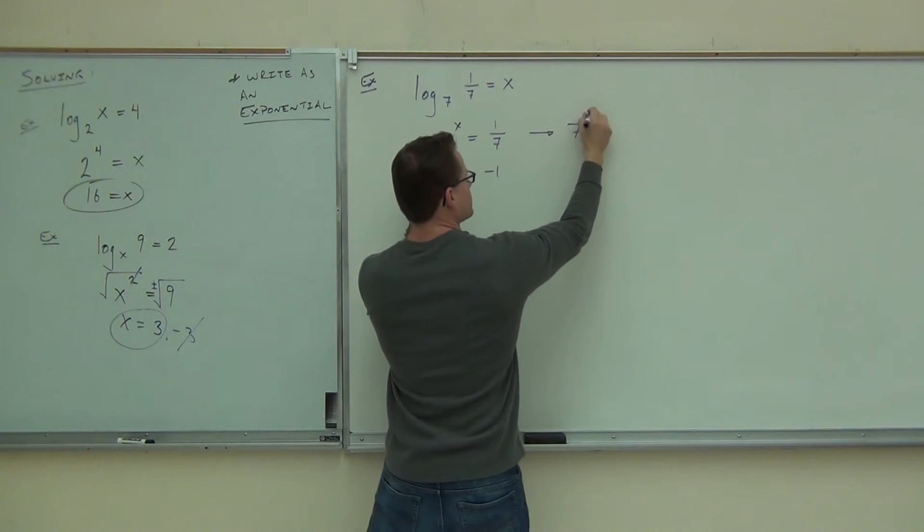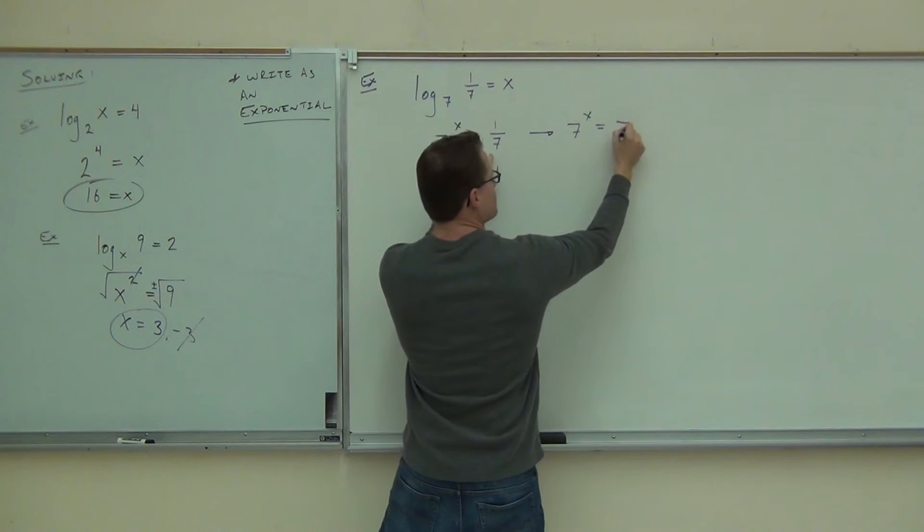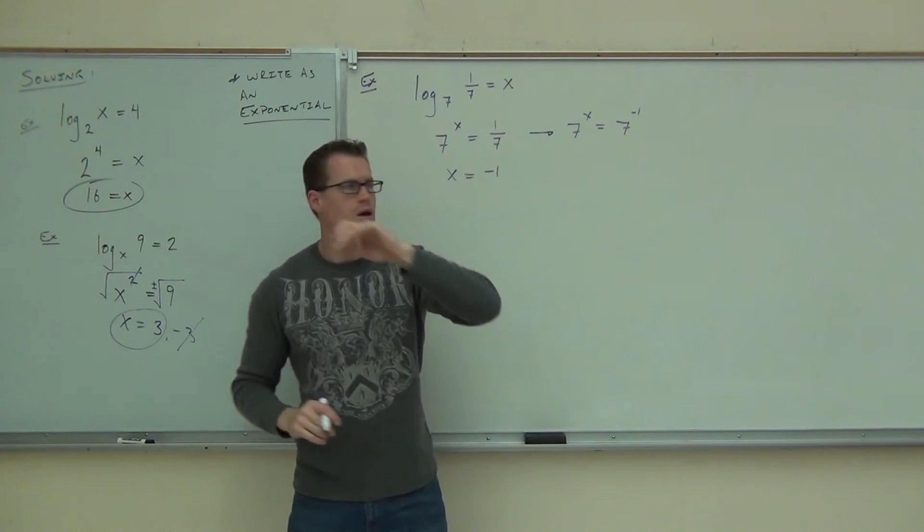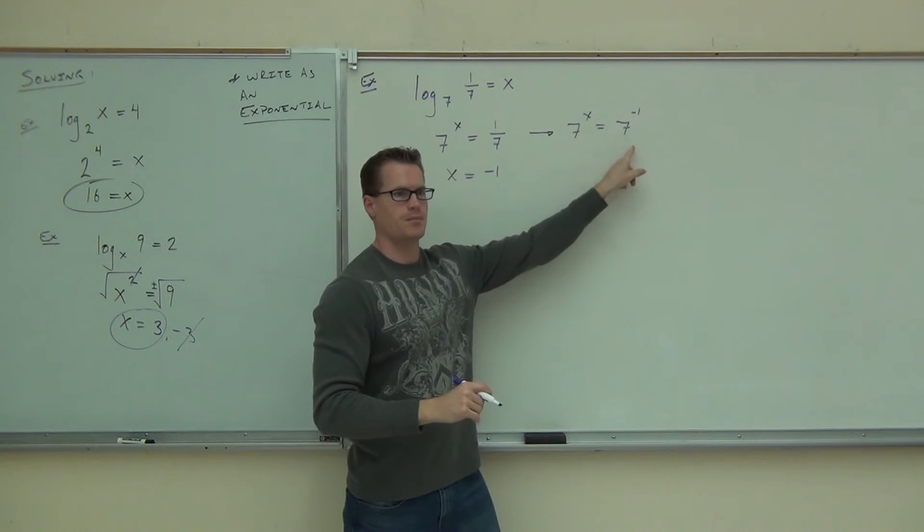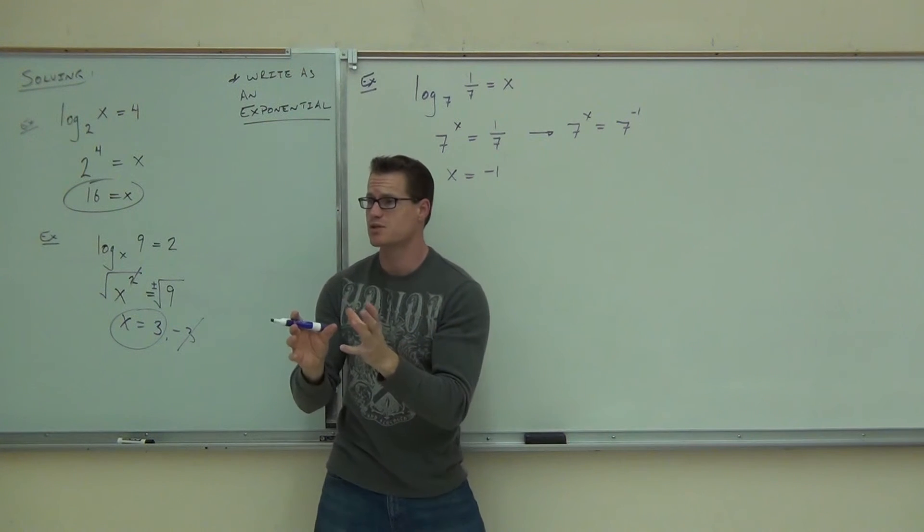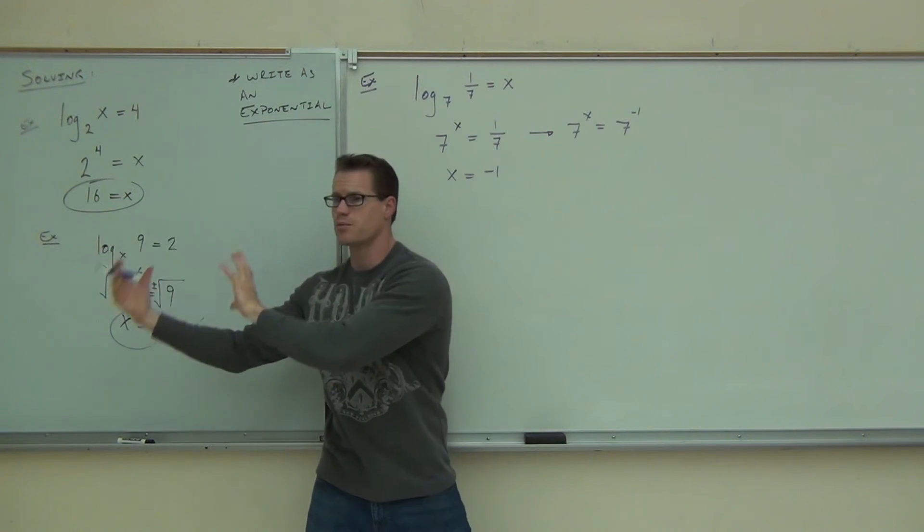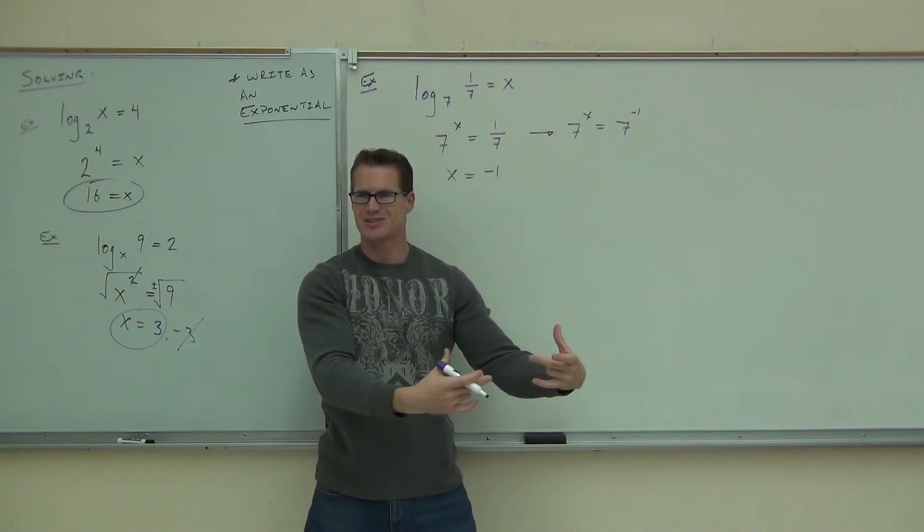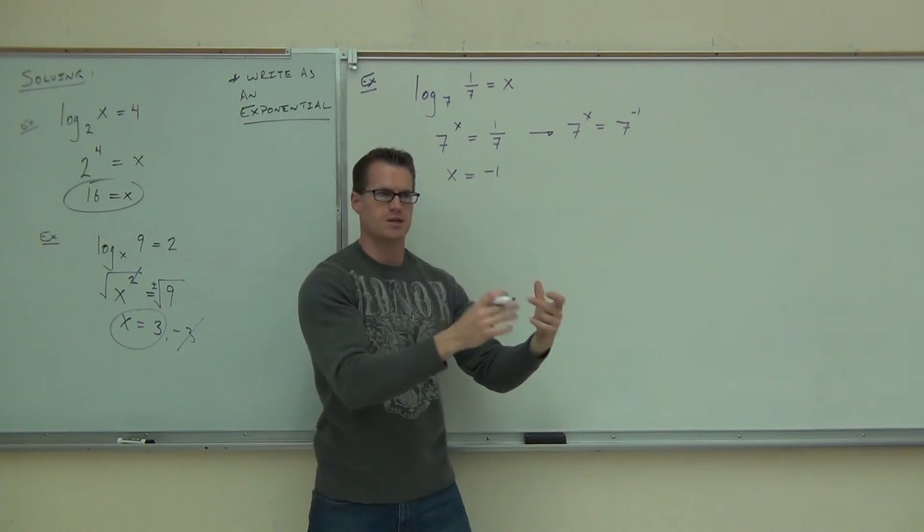This would be 7 to the x equals, this is 7 to the negative 1. Remember how we move up that number to get that negative 1? Look at that. Are the bases the same? What does it tell you if the bases are the same? The exponents must be equal. You are solving exponentials again, folks. We're now just translating from logarithms into exponentials, and now you have a way to solve it. Isn't that kind of cool? As long as you can translate to exponentials, you got it.